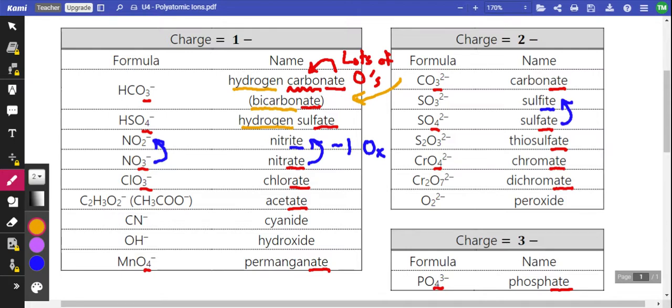But with that extra positive one charge, we're going to be a little less negative. So if regular old carbonate has a negative two charge, and now we've got hydrogen carbonate with an extra positive one in there, negative two plus positive one gives us a negative one.